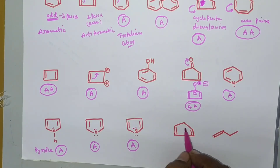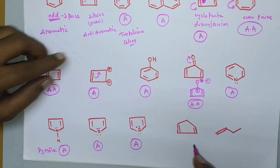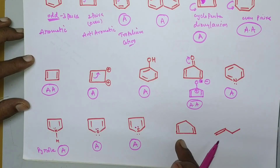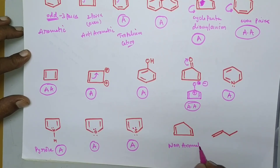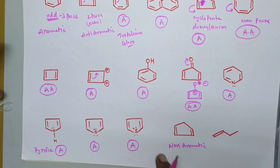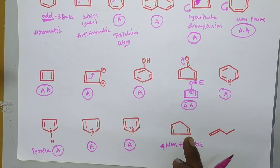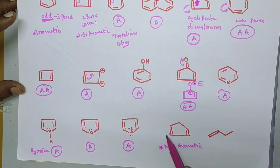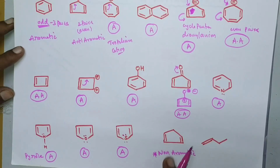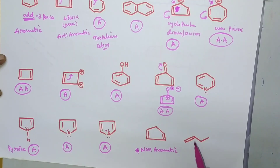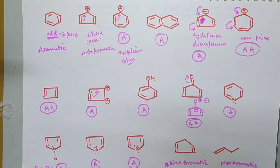A molecule with a double bond, then a single bond, then another single bond has no conjugation. Even though it consists of two pairs of electrons, there is no delocalization of π electrons due to the absence of conjugation — no alternating double and single bonds, and no conjugation with any charge. Therefore, it is non-aromatic. If any molecule is neither aromatic nor anti-aromatic, it is said to be non-aromatic.